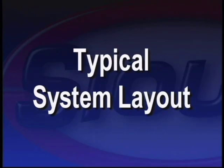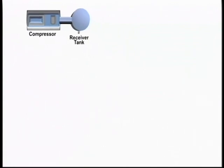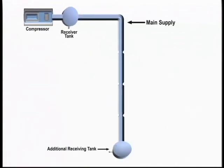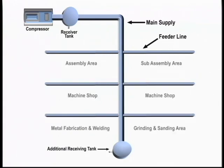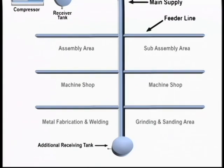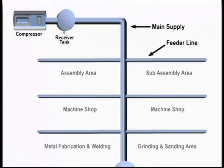A typical system layout would be a compressor and receiver tank and a main supply line going down the center of the plant to feed each department. Under this layout, the drop furthest from the compressor doesn't get the necessary volume if a drop closer to the compressor is in use.